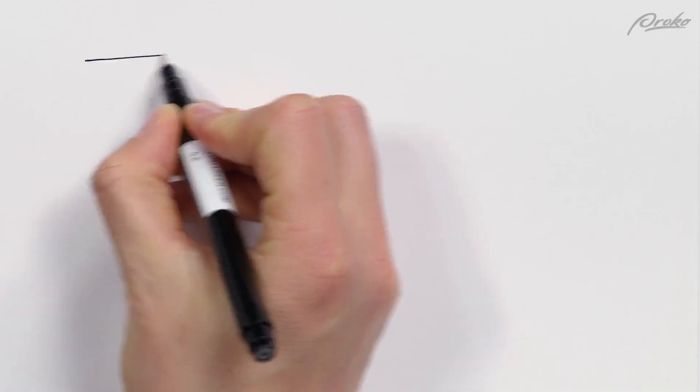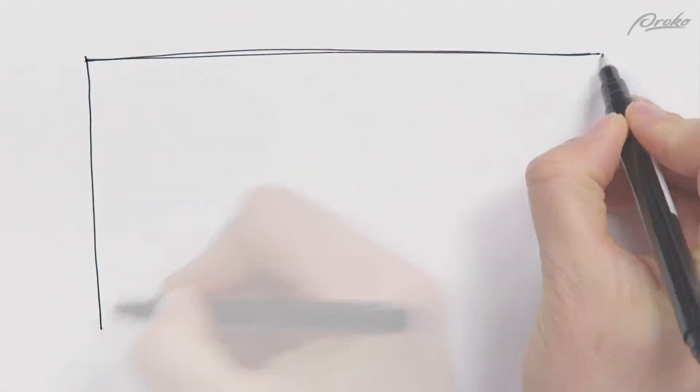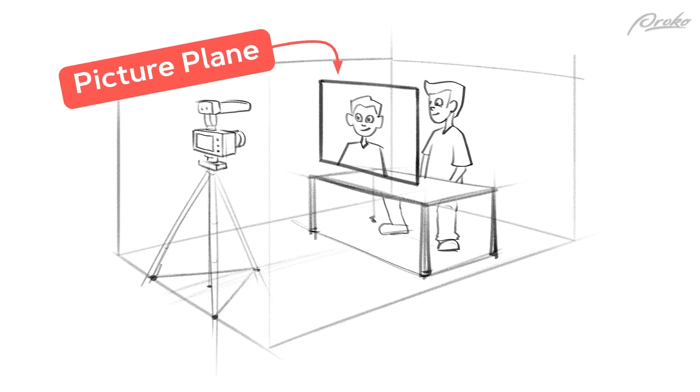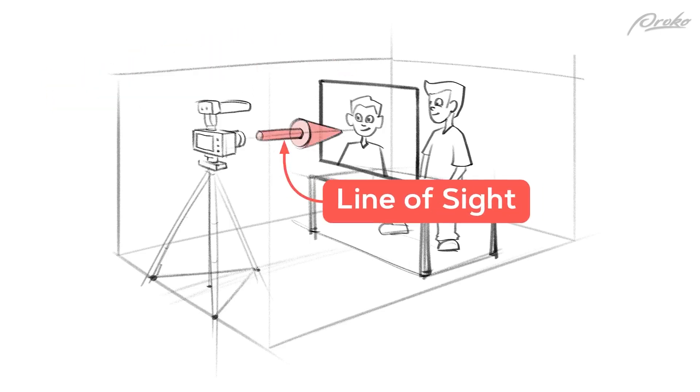Imagine that you're looking through a window, and we can use the frame of this video as our window. Everything that you see through this window is what you draw on your paper. This is called the picture plane, and it's perpendicular to your line of sight — which is just the direction you're looking, directly at me. Technically it doesn't have to be perpendicular, but then it gets wonky and distorted, so just forget I mentioned it.